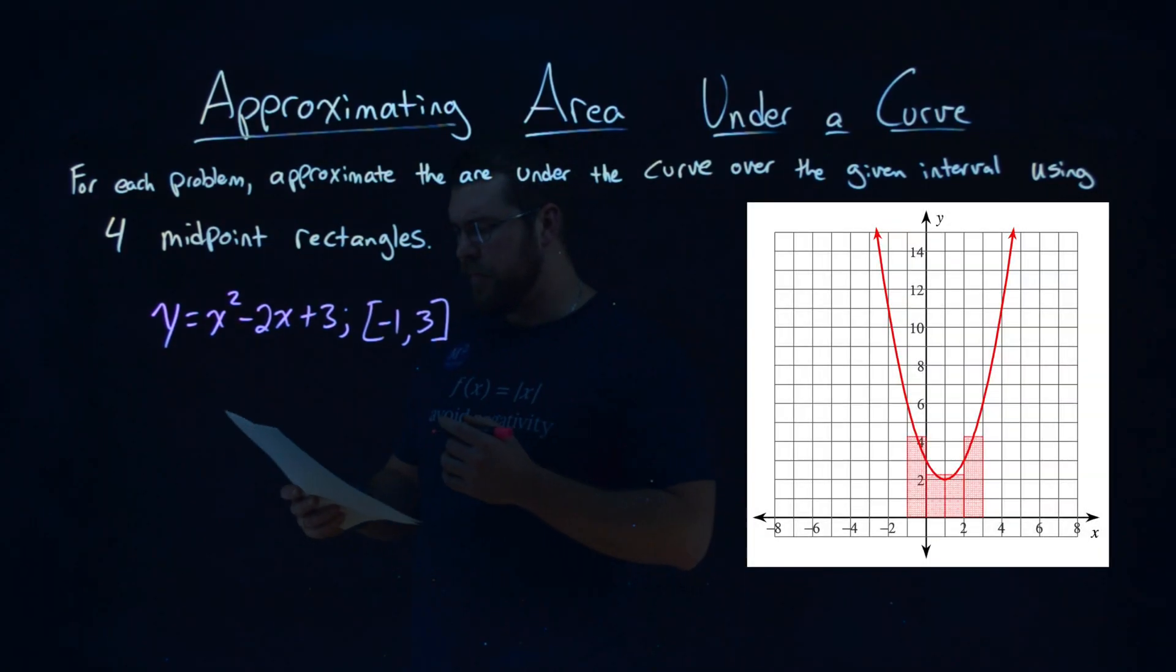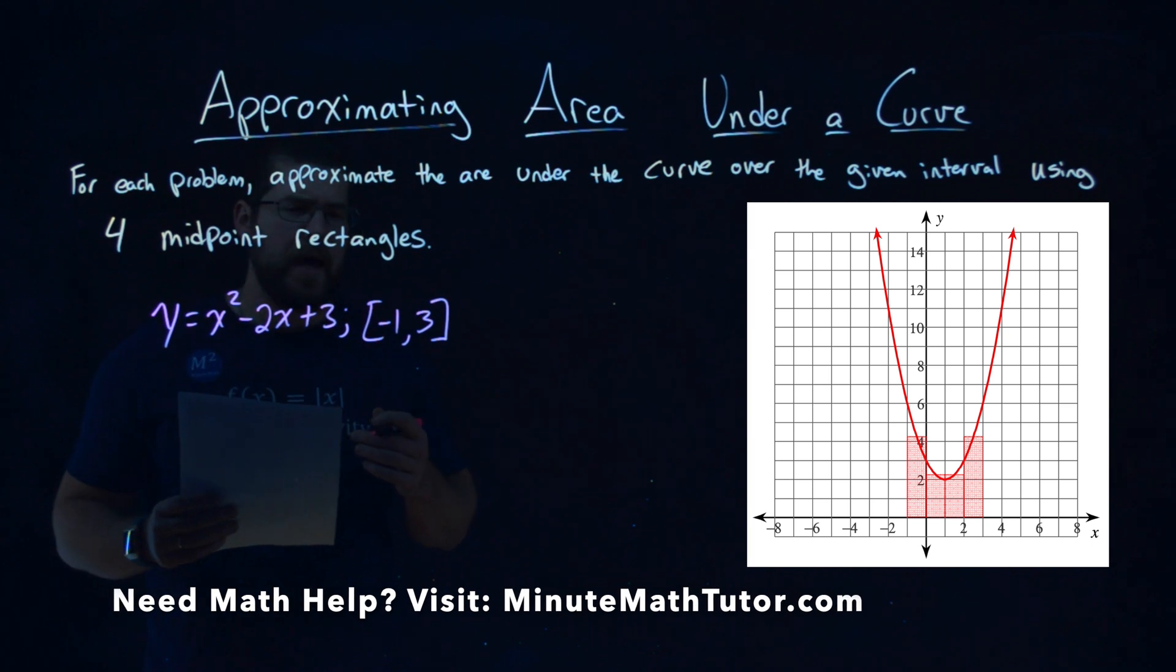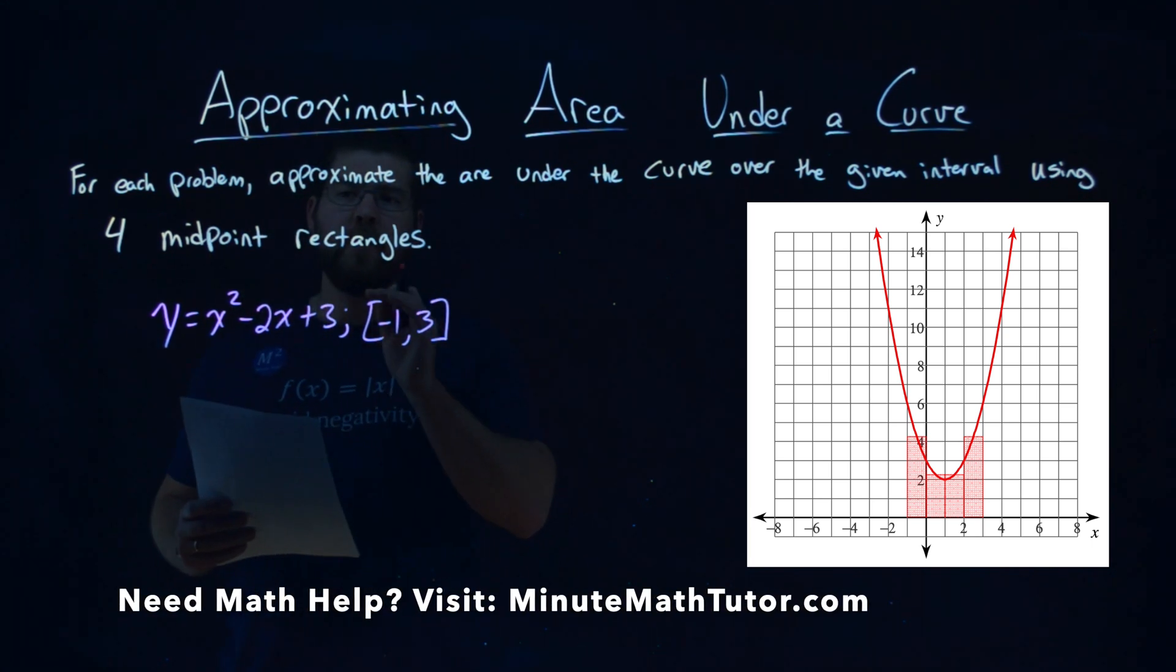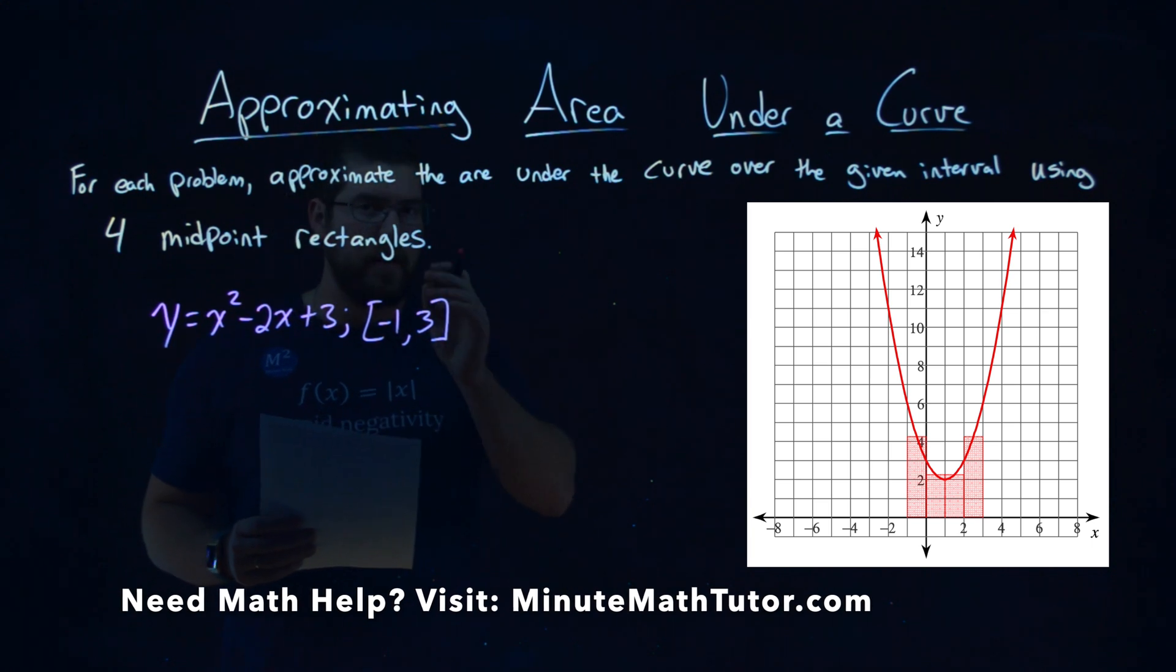We're given this problem right here, y equals x squared minus 2x plus 3, and we are given the interval of negative 1, 3, and we need to find four midpoint rectangles that approximate the area under the curve.